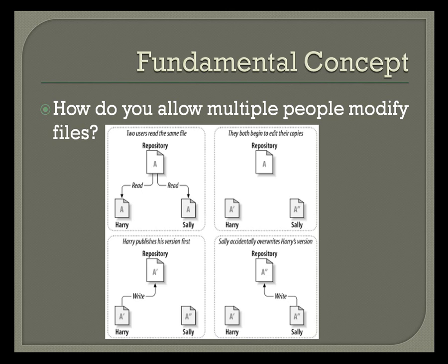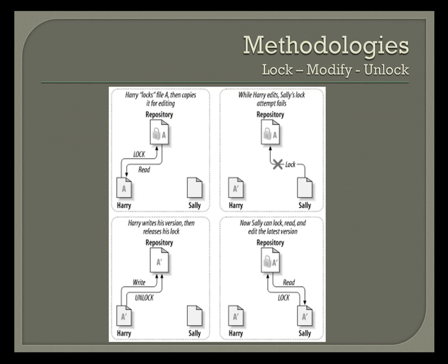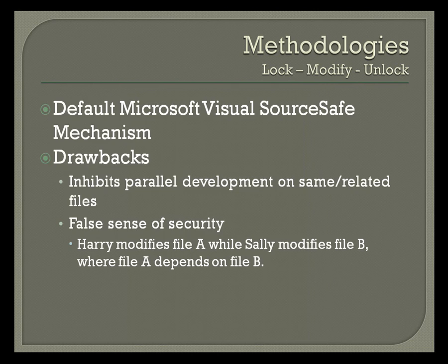There are several tools and philosophies for how you do file synchronization. One method is the lock-modify-unlock approach, which is the default for Visual Source Safe. Basically, you tell the repository you want to edit a file, it gives you a copy and locks it so nobody else can edit or retrieve it. When you're done, you unlock it and the next person can retrieve it and get your changes.